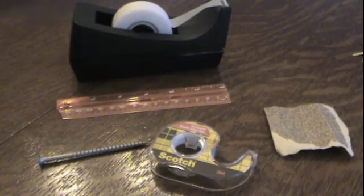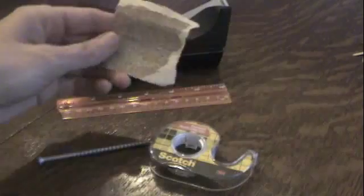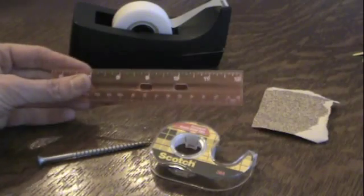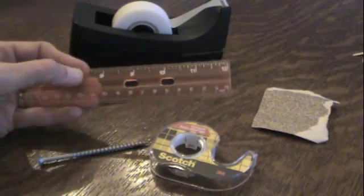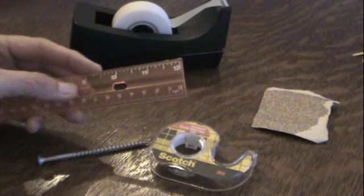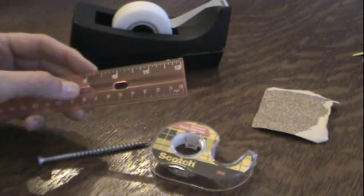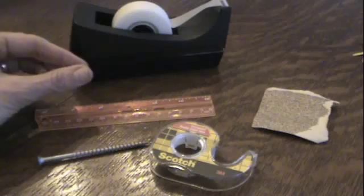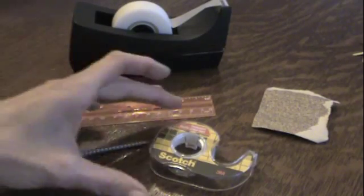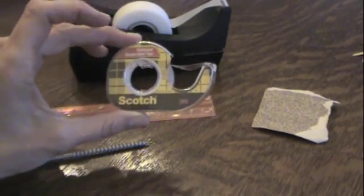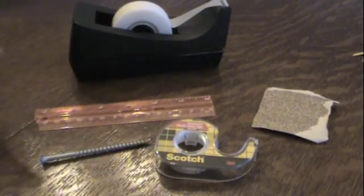We'll also be using some very simple tools and supplies. We need sandpaper to scrape the insulation off the magnet wire, a ruler to measure, and once the coil is complete we're going to attach it to the foam core using double sided tape or hot glue.